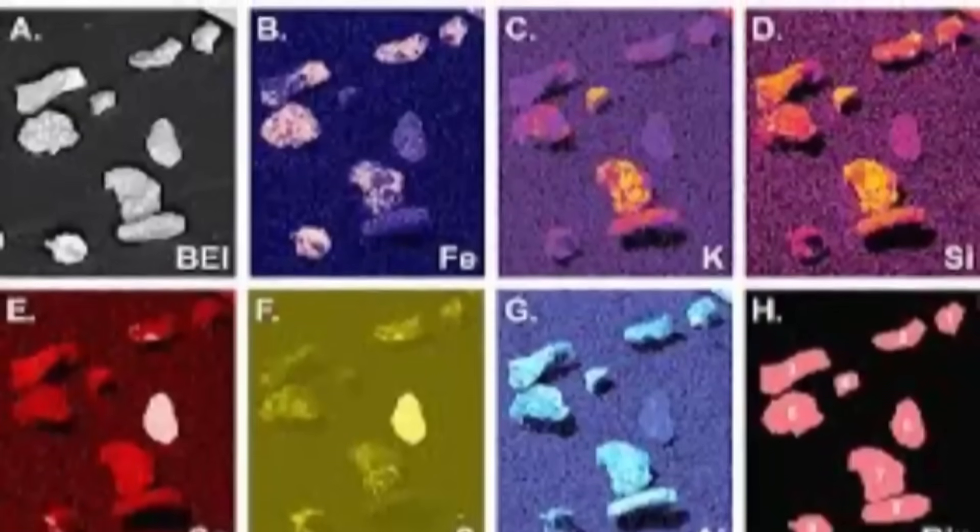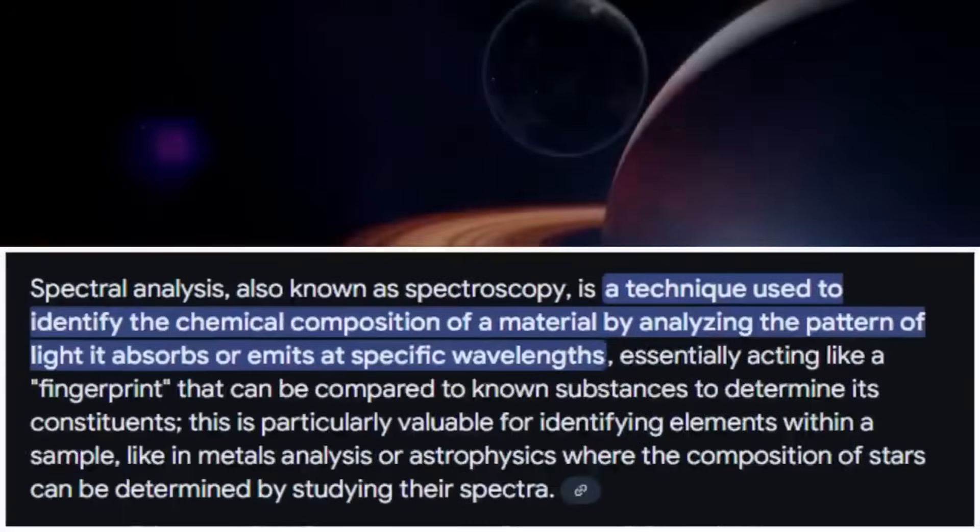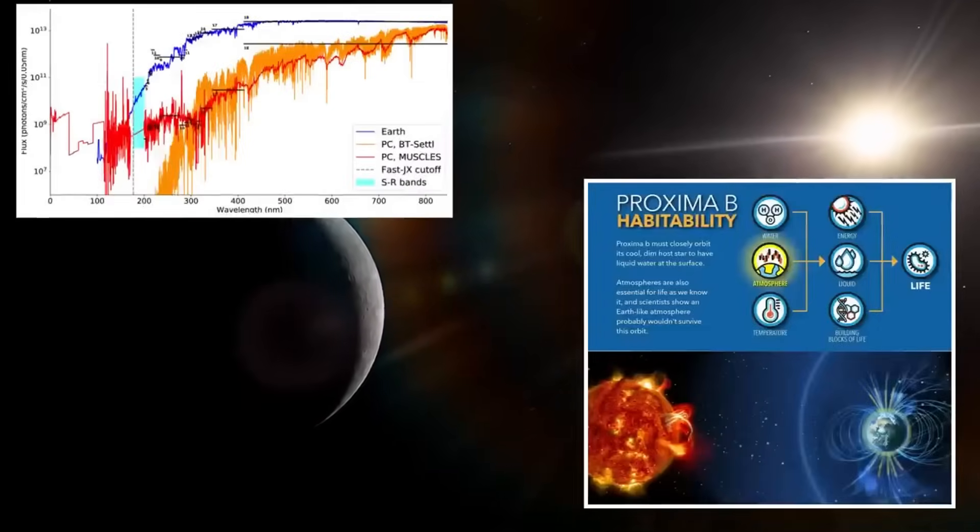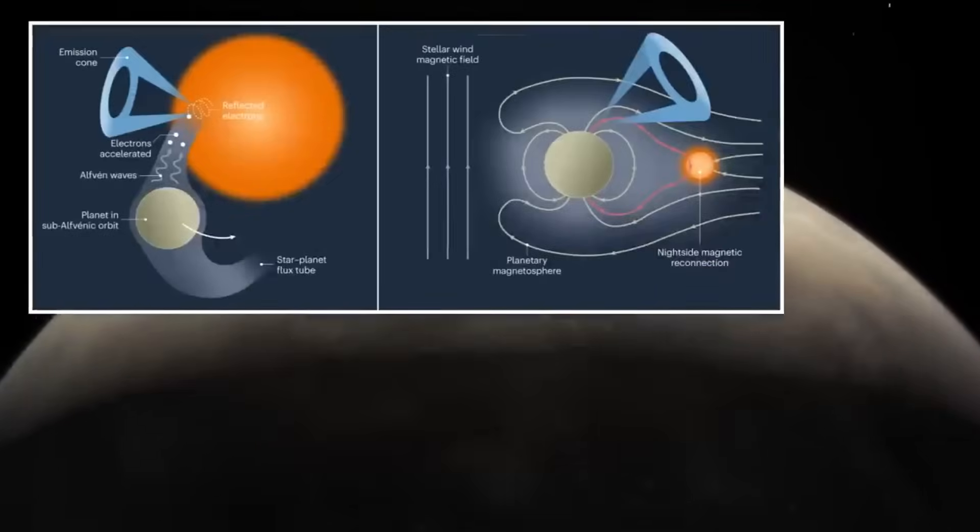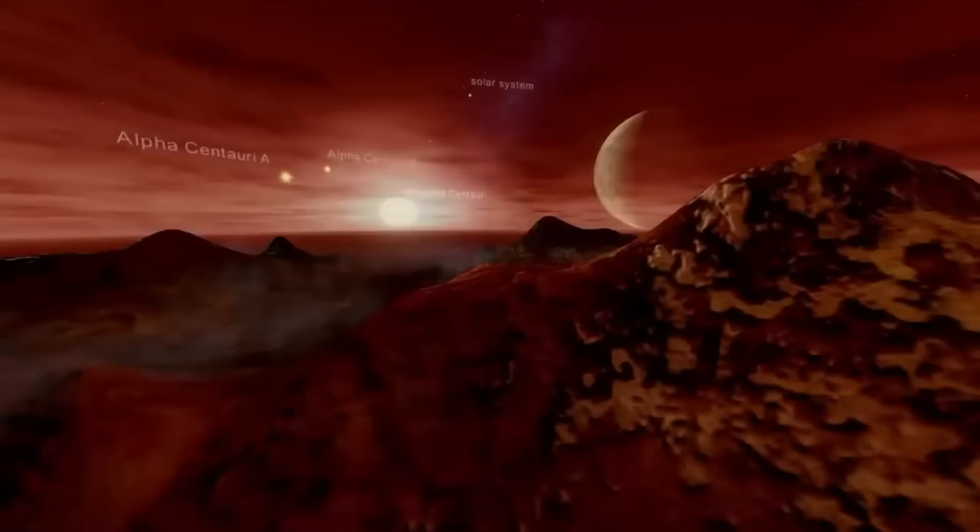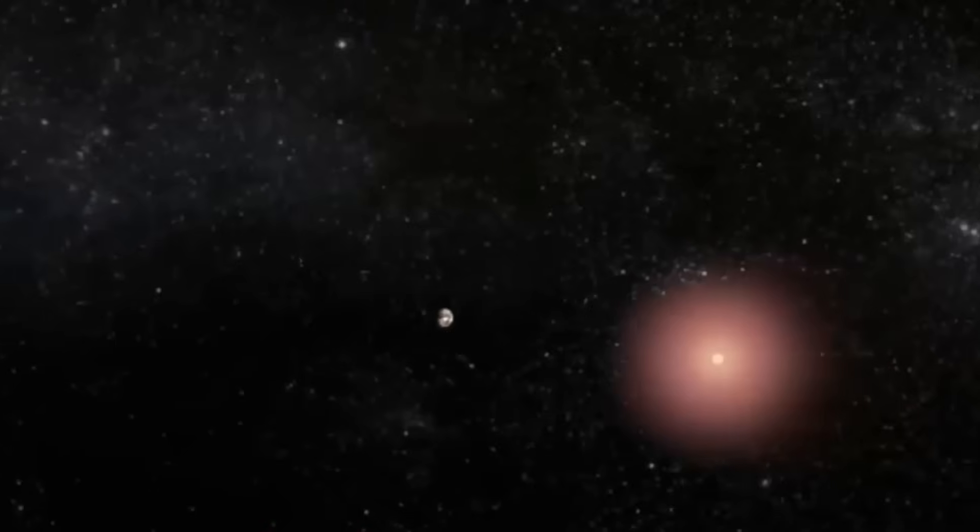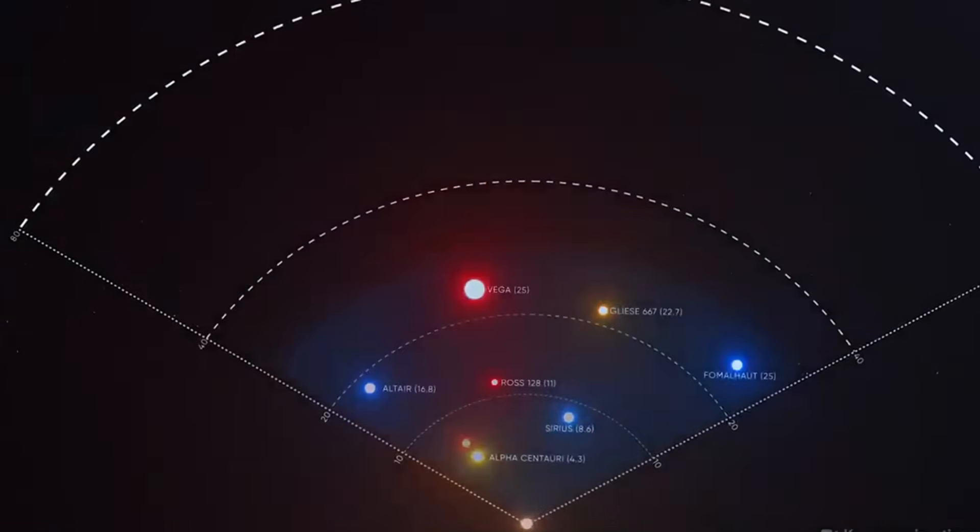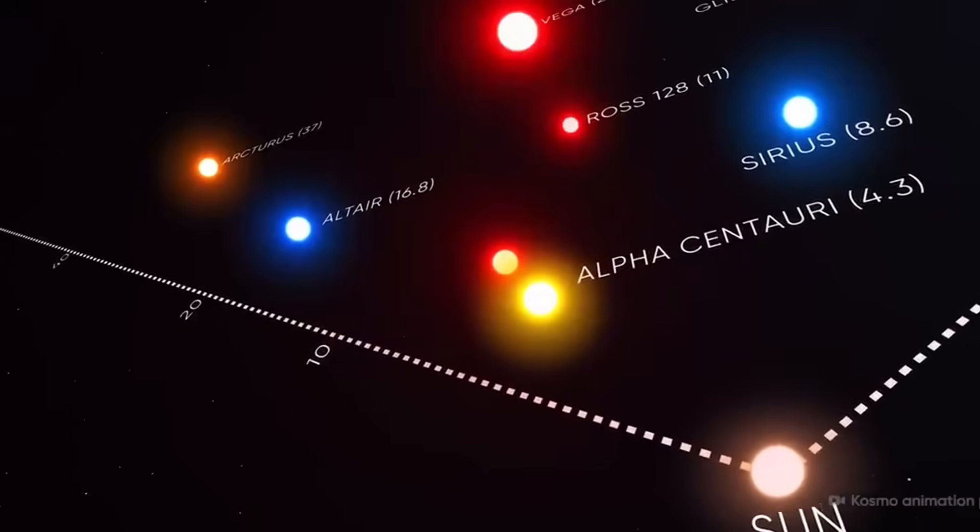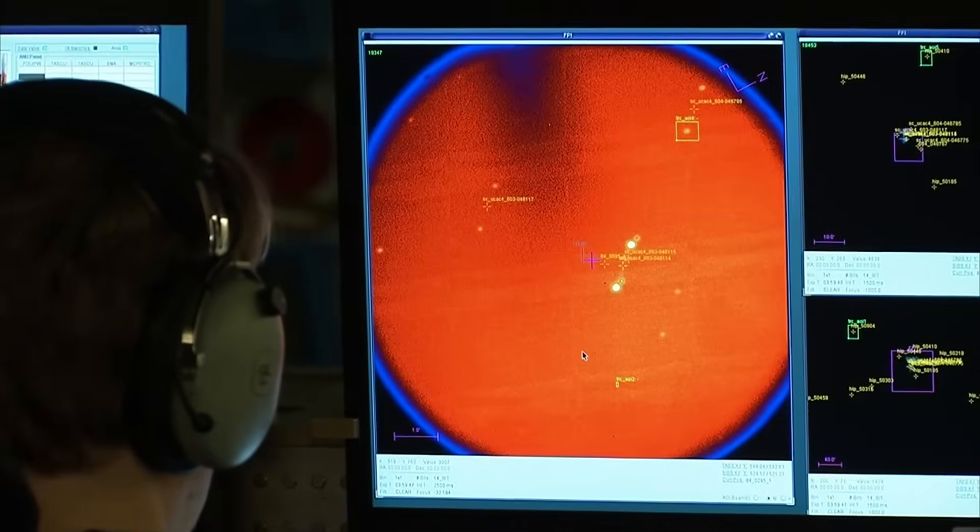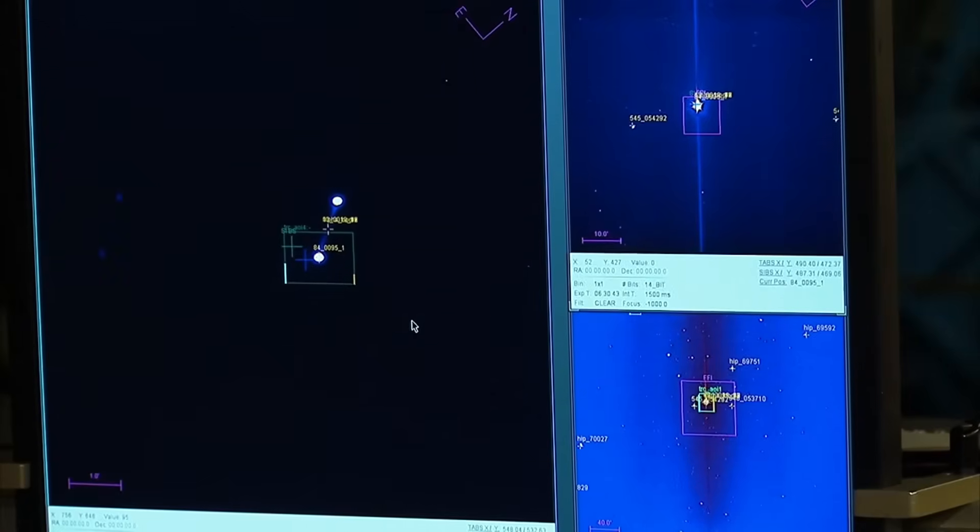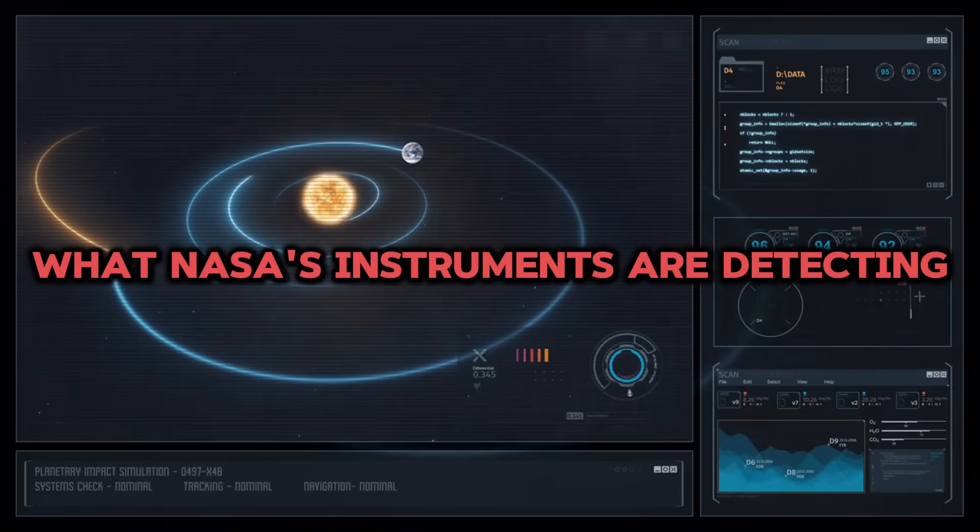Spectral readings indicate localized thermal activity that is not explained by Proxima B's stellar environment. Some regions show temperature variations of over 80 degrees Celsius within relatively small areas—a phenomenon that doesn't align with what we'd expect from natural heating from Proxima Centauri, its host star. Perhaps most intriguing are sections that appear unusually structured. Unlike the random terrain formations expected on exoplanets, these organized patterns display geometric properties that suggest processes we've never observed on other worlds.